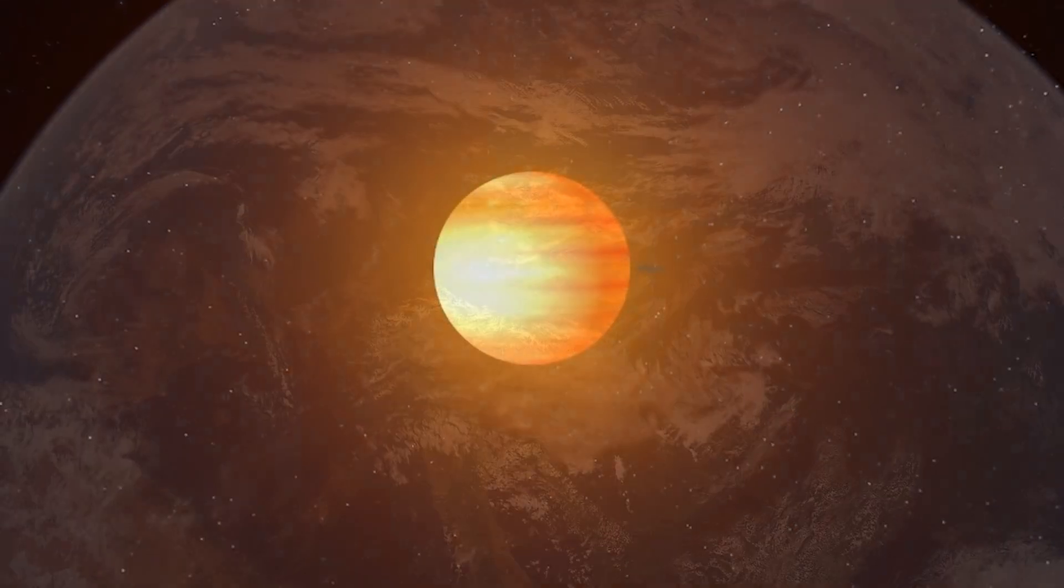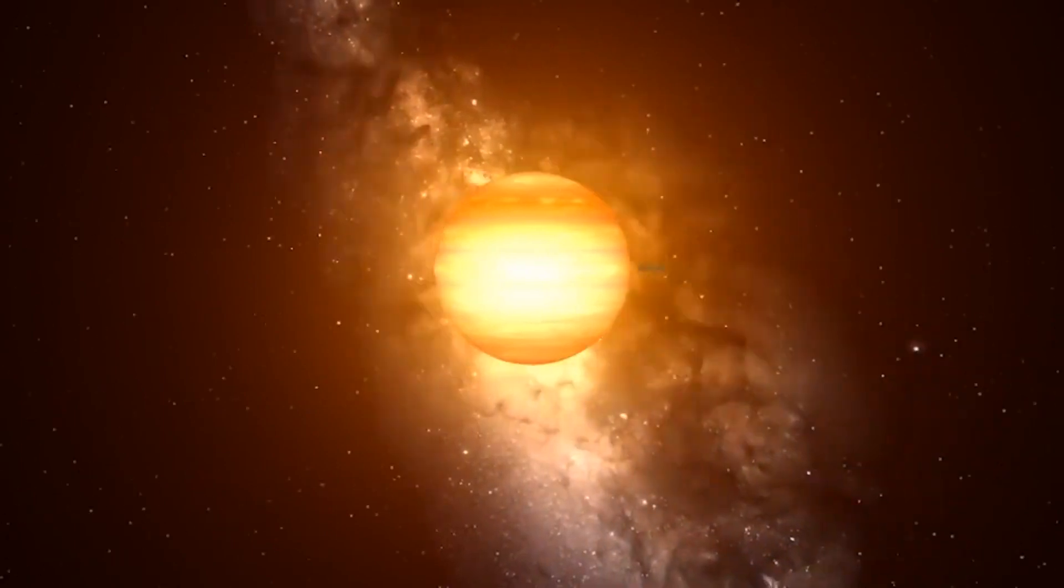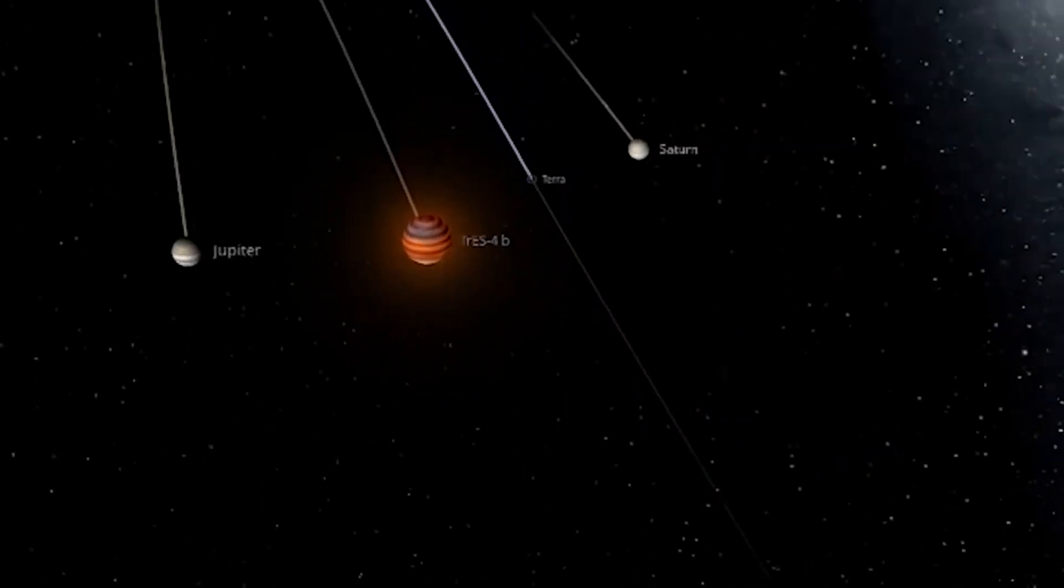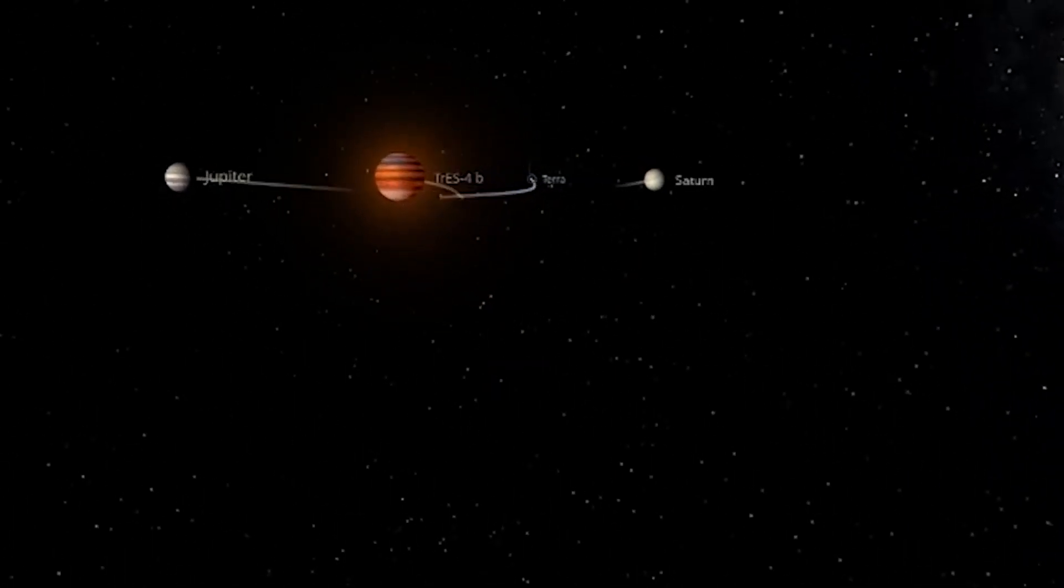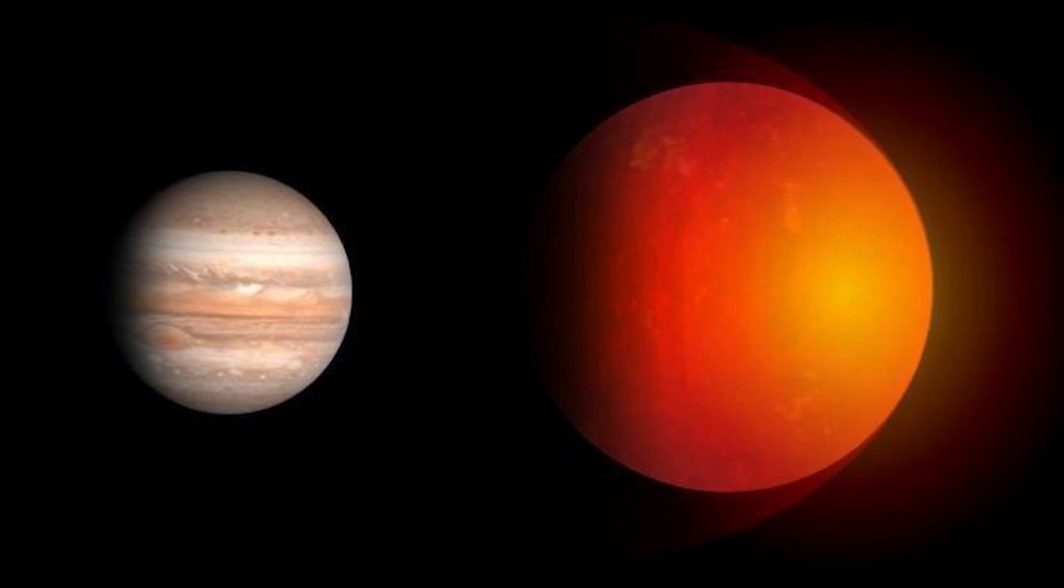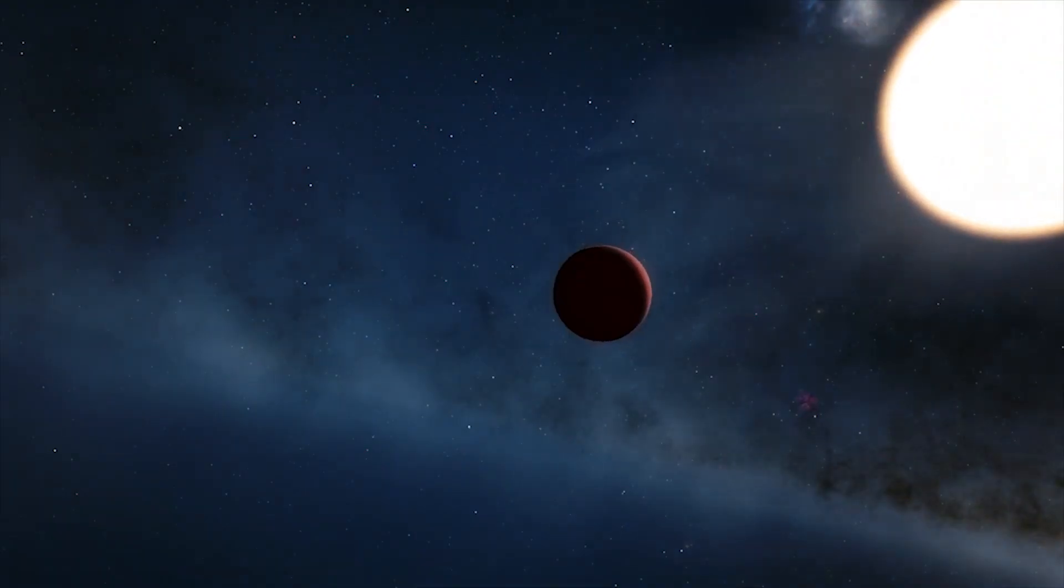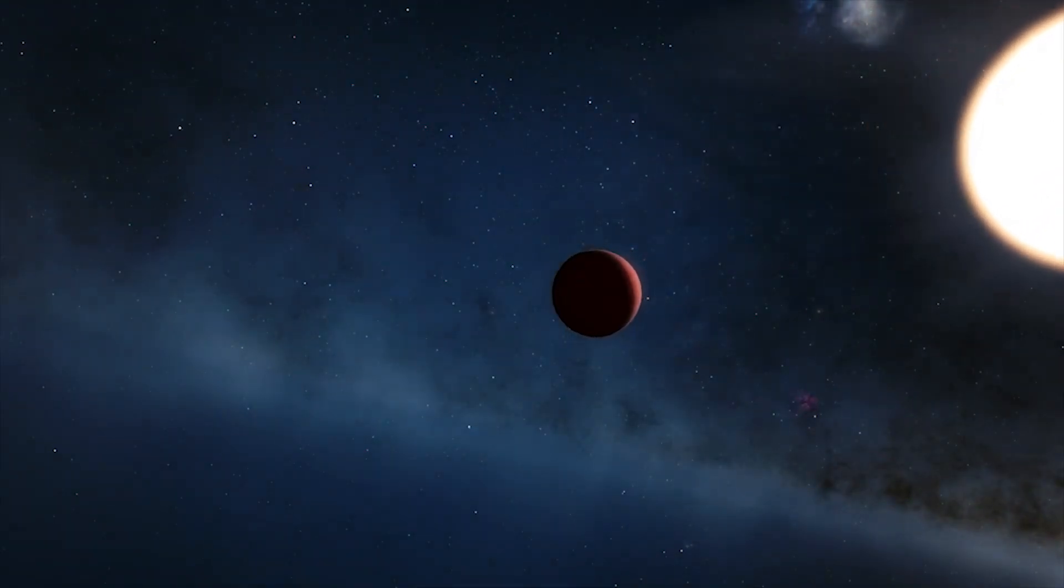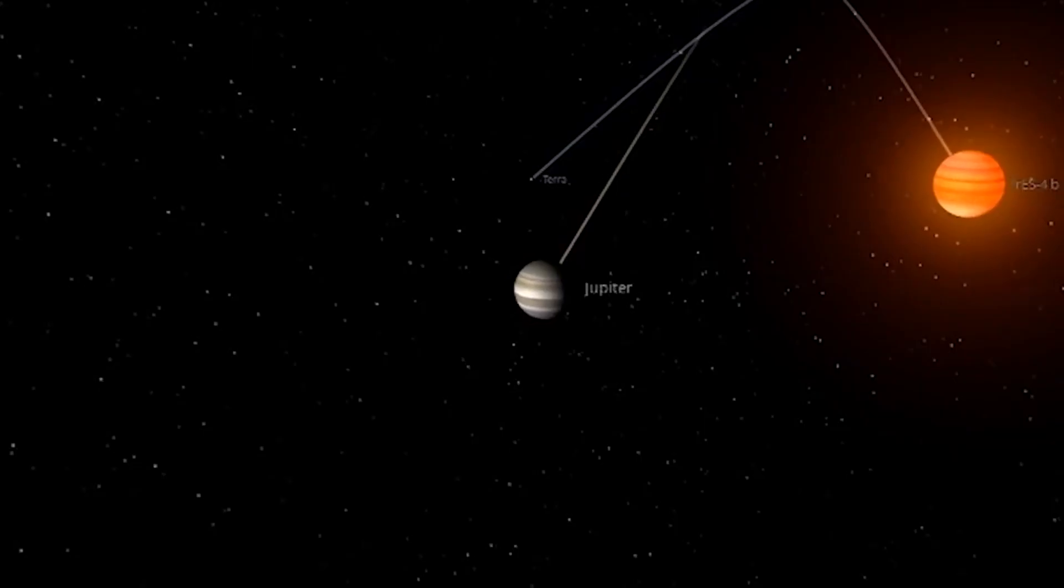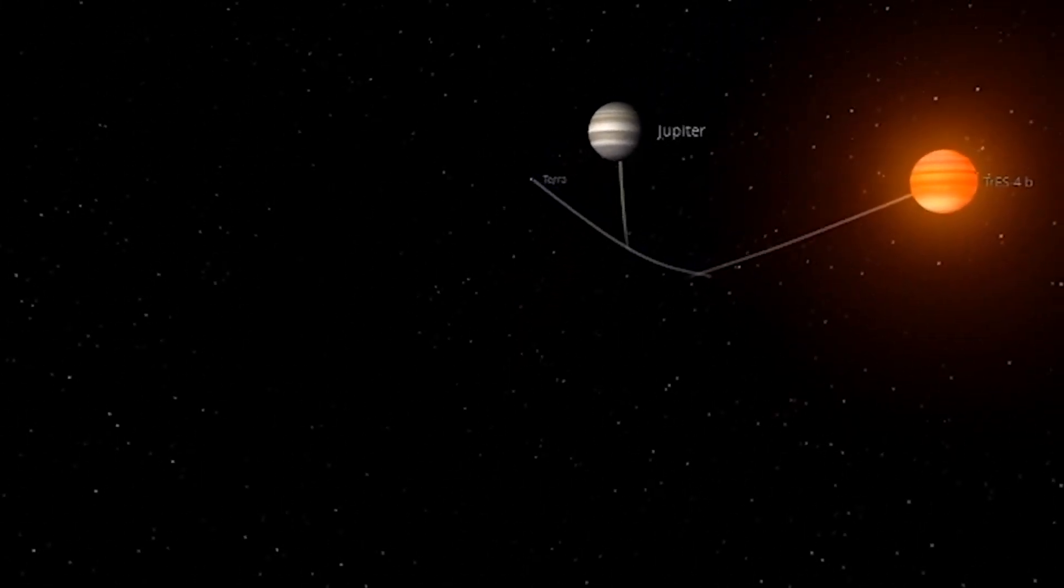Number 10: The largest planet until 2011, Trios 4b. The record-setting planet until recently was Trios 4b, located in the constellation Hercules. From 2006 to 2011 it was the largest planet in the universe. It is almost twice the size of Jupiter. What is curious, this planet is located in a binary system and there are no other similar ones yet known.